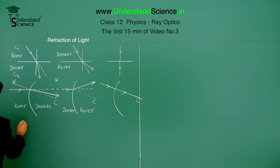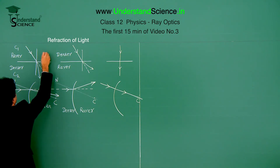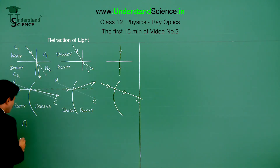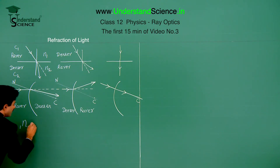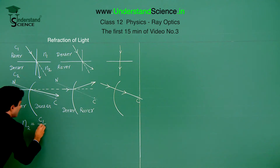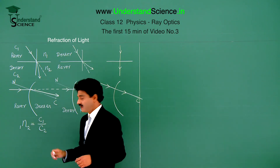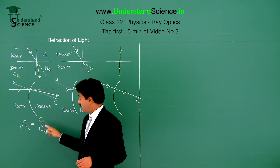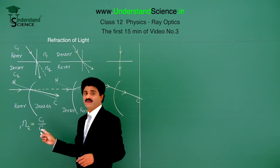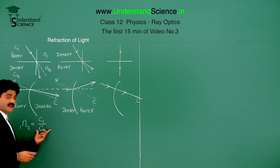Now, coming to the refractive index. When it goes from medium 1 to medium 2, the refractive index is n₁ in medium 1 and n₂ in the second medium. Written in terms of speed, the refractive index of medium 2 with respect to medium 1 is c₁ divided by c₂. The subscripts must match — 1 is the first medium, 2 is the second — you should not interchange only one side, otherwise it goes wrong. This is the basic formula for refractive index in terms of the speed of light.